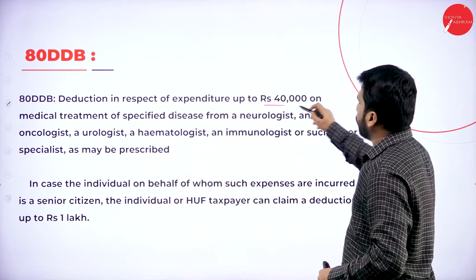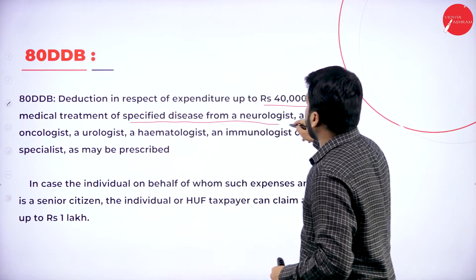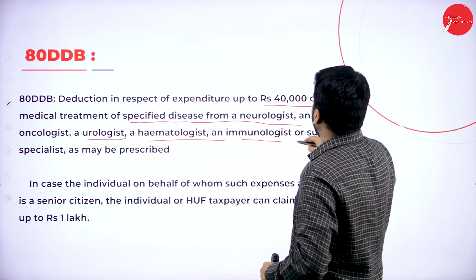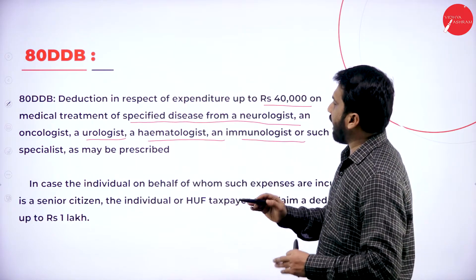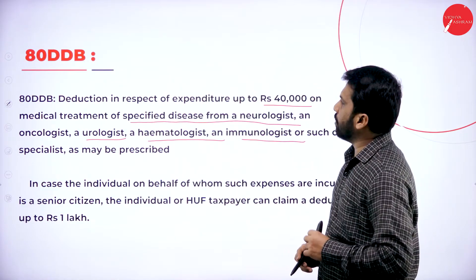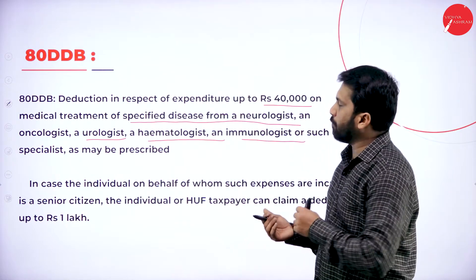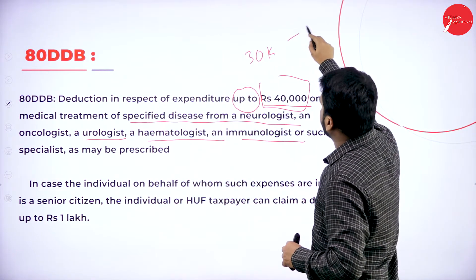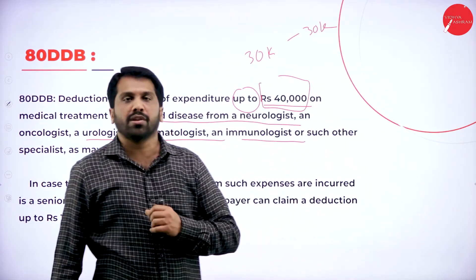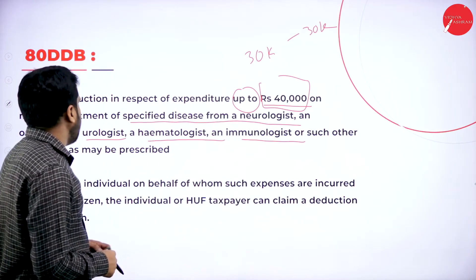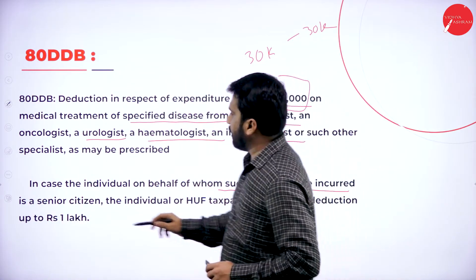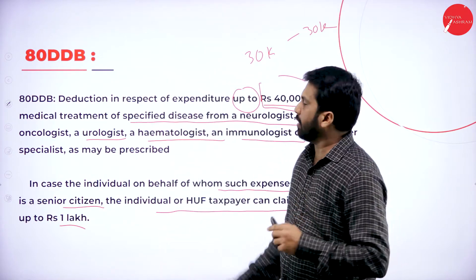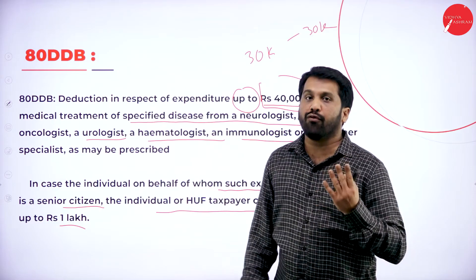Section 80DDB: expenditure up to 40,000 on medical treatment of specified diseases from neurologist, oncologist, urologist, hematologist, and immunologist. These are the medical specialists. The same concept applies — for yourself — remember, up to wherever they have mentioned, you go for that amount only. If you spend 30,000, you claim 30,000, not 40,000. In case the individual on behalf of whom such expenses are incurred is a senior citizen, the taxpayer can claim deduction up to 1 lakh. If it is an individual below 60 years, you can go up to 40,000.